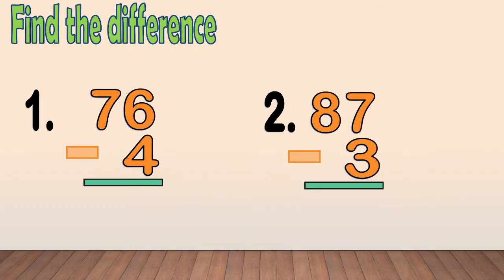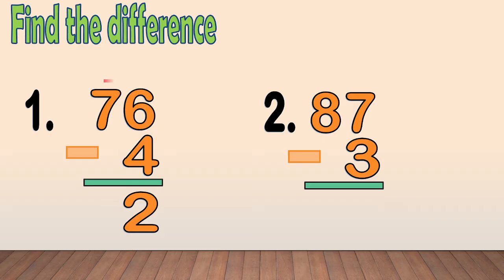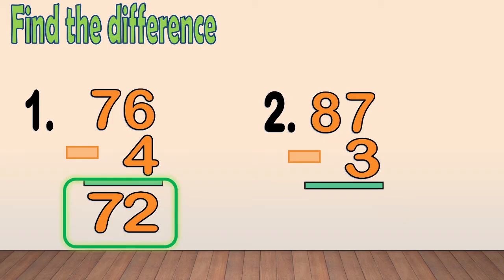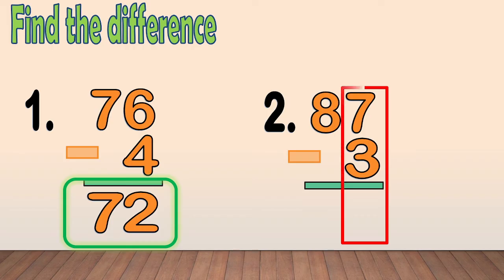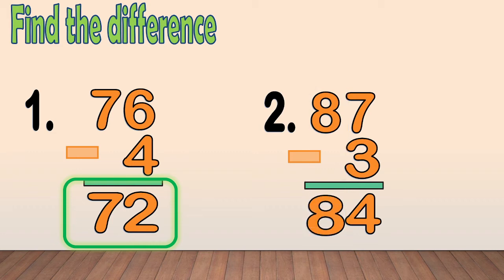Let's answer this. Number 1: 76 minus 4. First, subtract the ones column — 6 minus 4 equals 2. Next, we bring down the tens digit 7. So, the answer is 72. Number 2: 87 minus 3. First, subtract the ones column — 7 minus 3 equals 4. Next, we bring down the tens digit 8. So, the answer is 84.